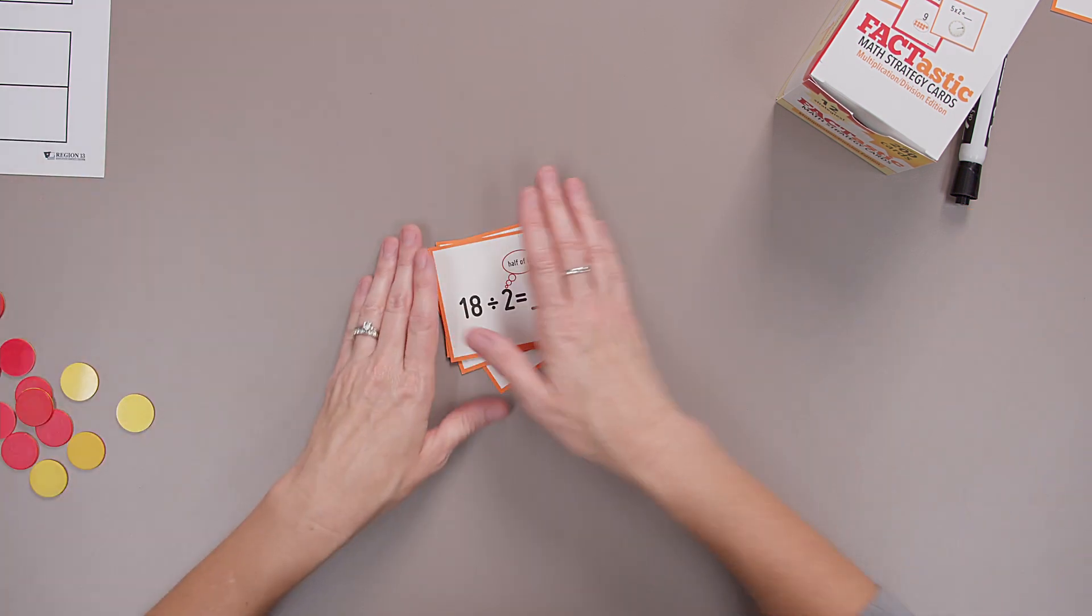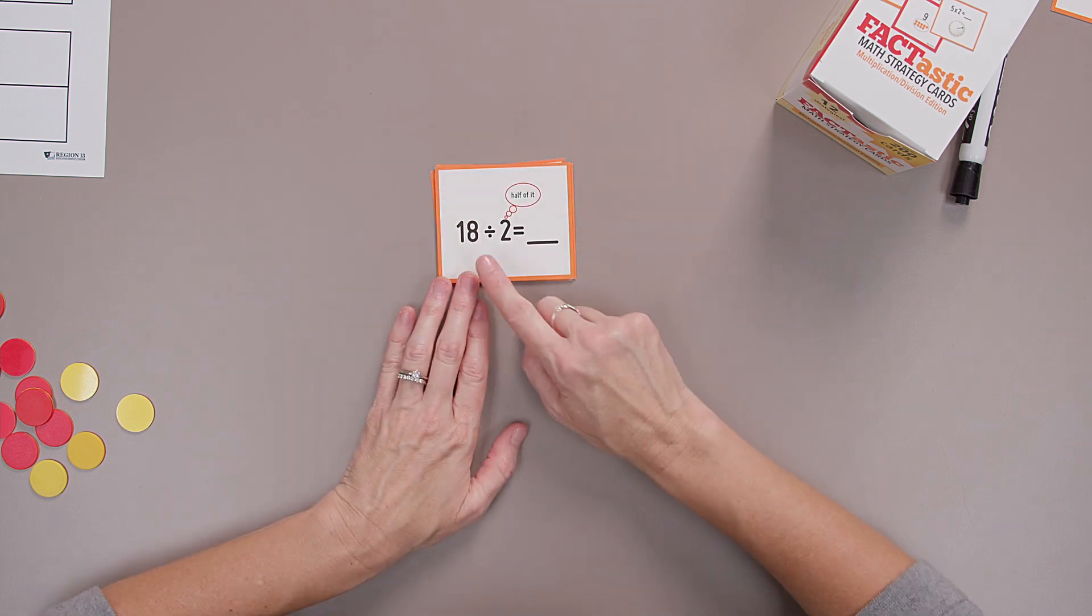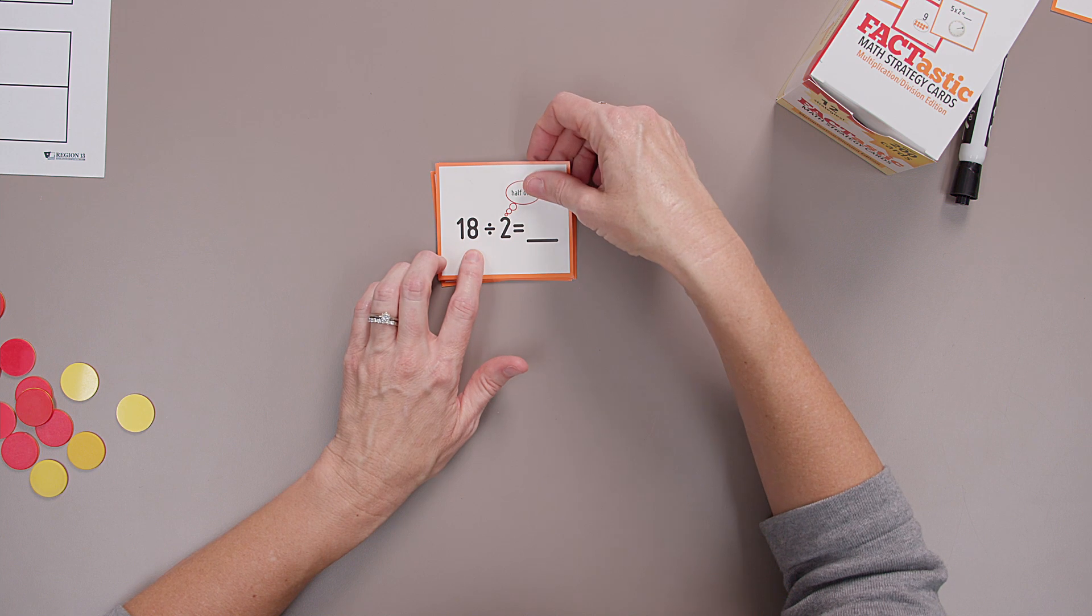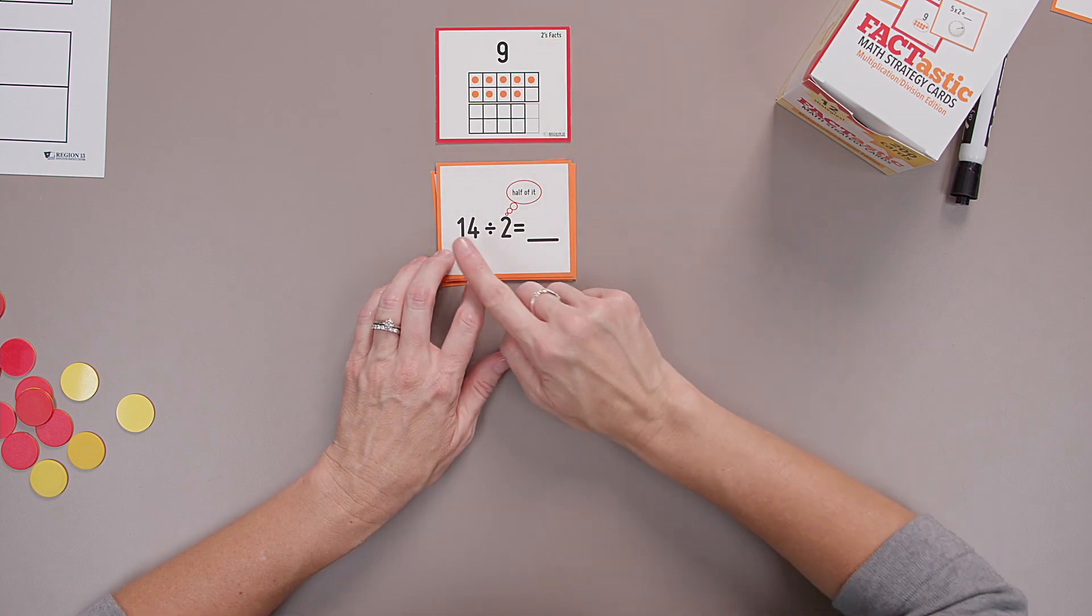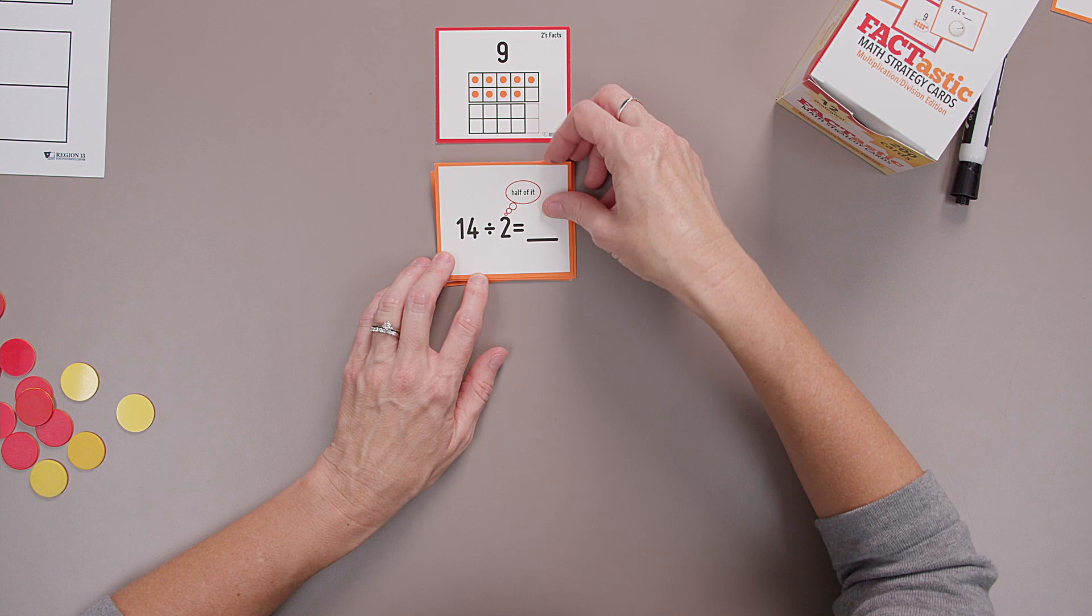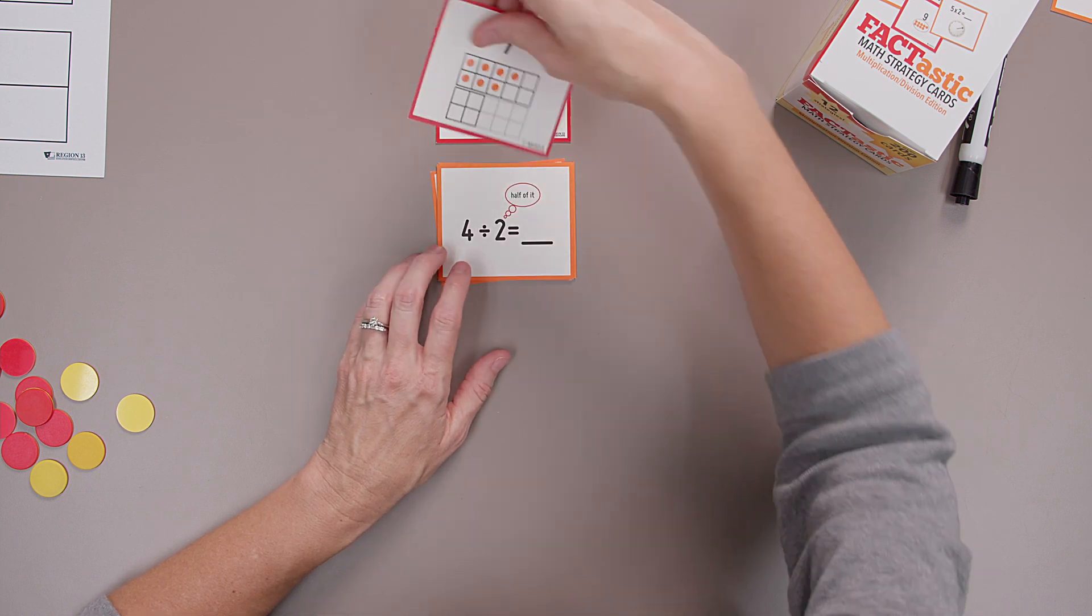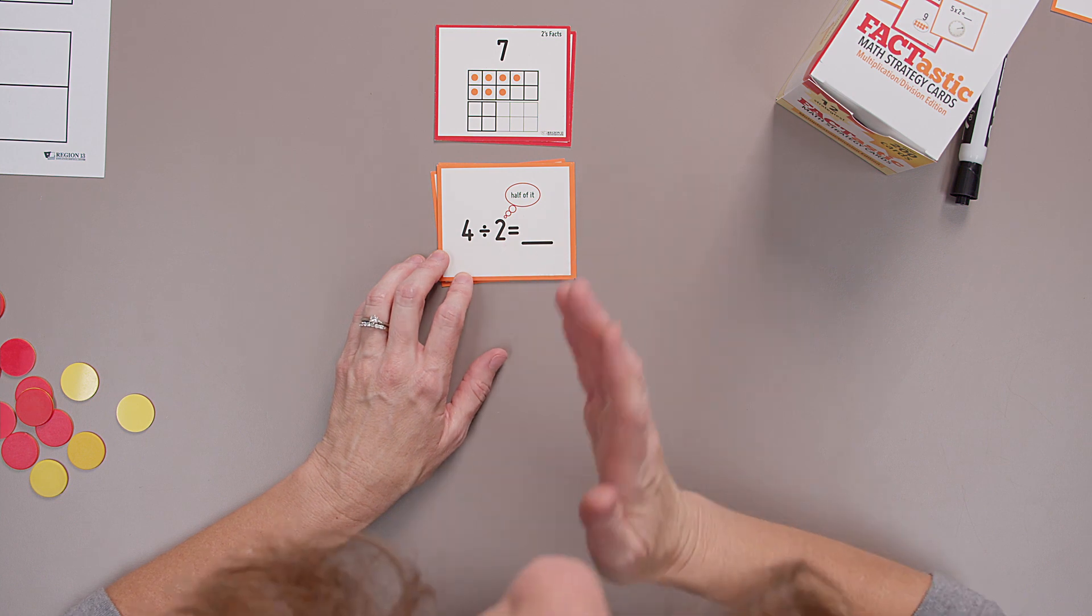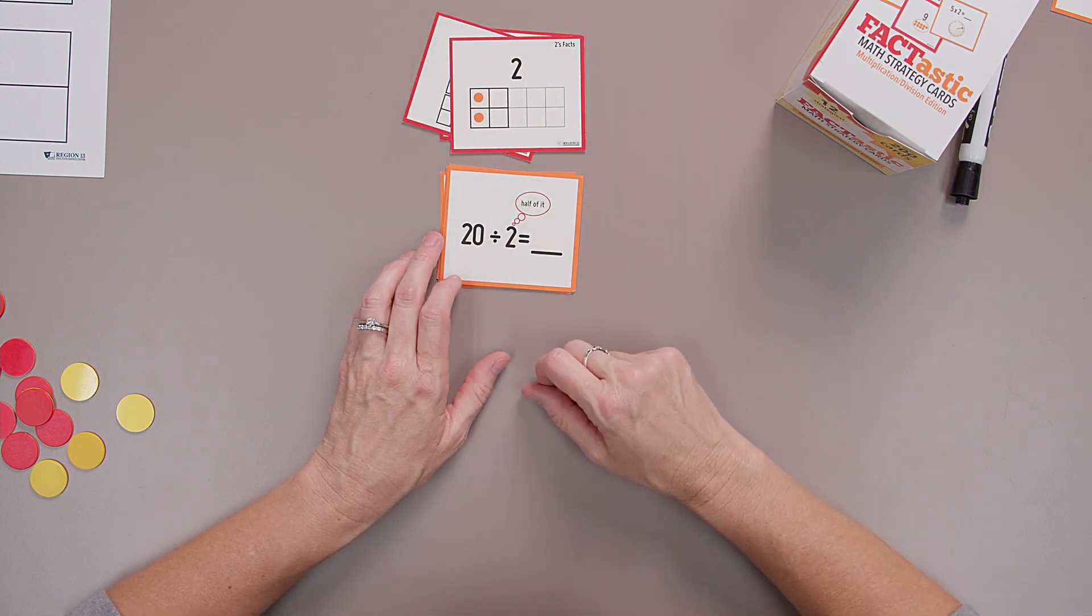All right, mathematicians, try a couple of division. Eighteen divided by two. Can you take half of eighteen? Is nine. Fourteen divided by two, half of fourteen? Seven. Four divided by two, half of four. Do you know this one? Is two.